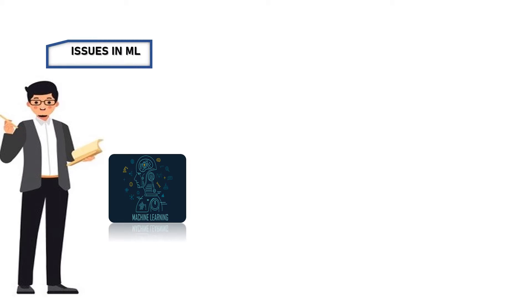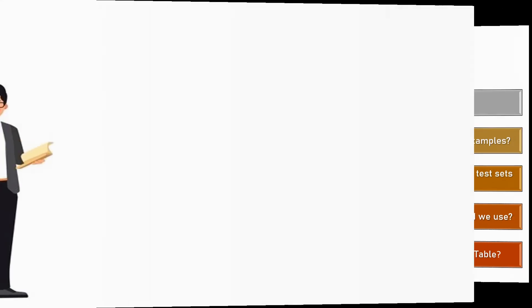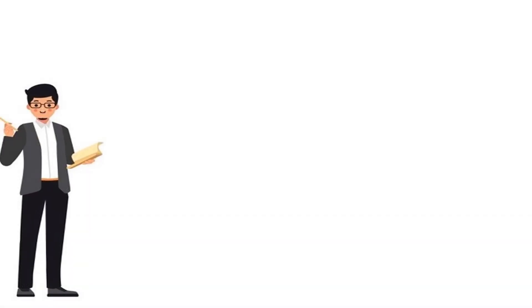Issues in ML: A. What algorithm to be used for existing things? B. What method to follow to learn the training examples? C. How many training examples and how many test sets we need to take? D. To reduce overhead of learning which method we use? E. According to data, which method is a suggestible table? This is one of the main perspectives in machine learning.